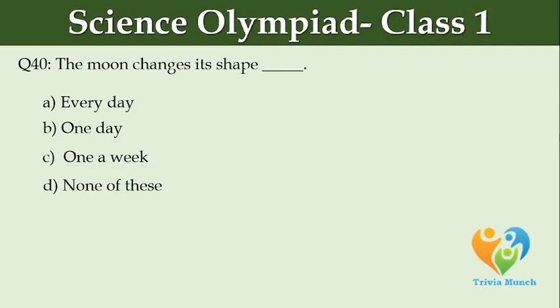The Moon changes its shape dash. Option A: Every day. Option B: One day. Option C: Once a week. Option D: None of these.